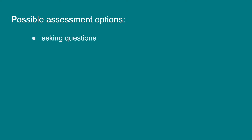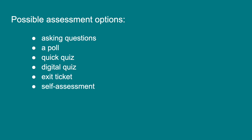I might assess these by asking questions, taking a poll, a quick quiz using thumbs up or thumbs down, a digital quiz, an exit ticket, a self-assessment using traffic light coloured cups or sticky notes, a reflection which is verbal or a one-minute write, or an emoji or a number which is descriptive of their level of achievement, a tick and flick, or an observation form.